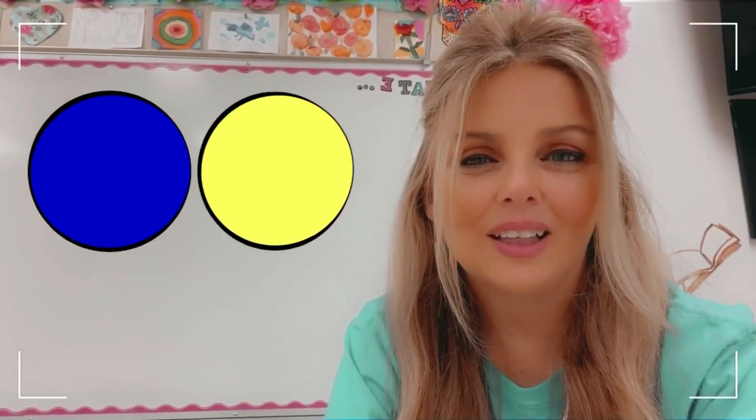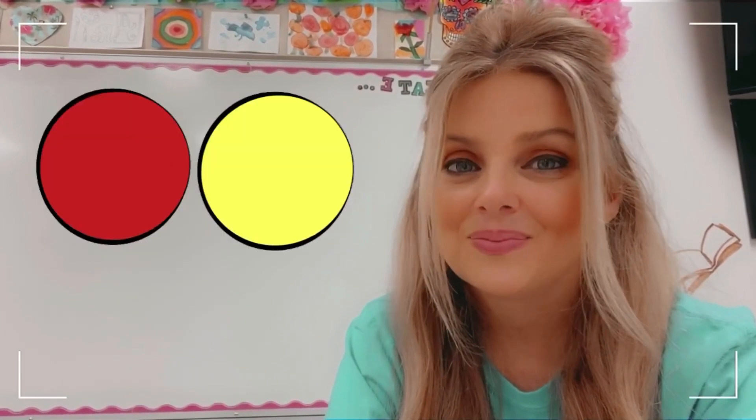So what happens if you mix two of the primary colors together? You make a secondary color. So let's try it. If you mix red plus blue, that equals purple or violet. If you mix blue plus yellow, what does it make? Green. What about yellow plus red? Orange.